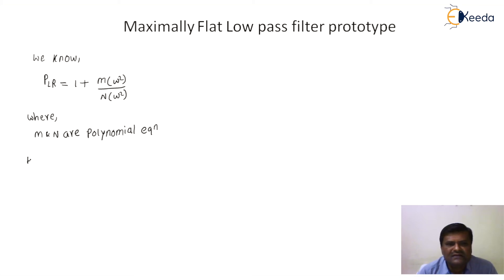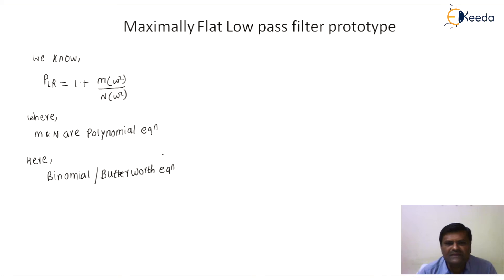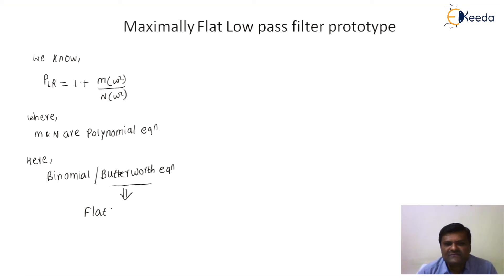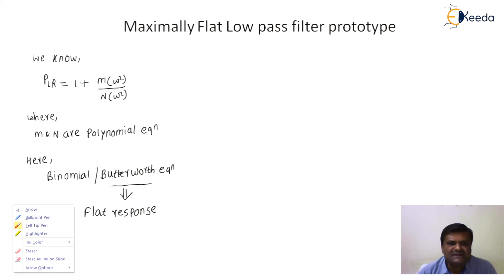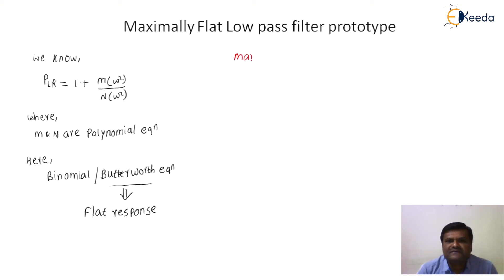Here we are going to select a binomial, or what is called a Butterworth polynomial. When you select a Butterworth polynomial, you will get a flat response throughout the passband. Because of this flat response, this filter is also called a maximally flat filter or a Butterworth filter.